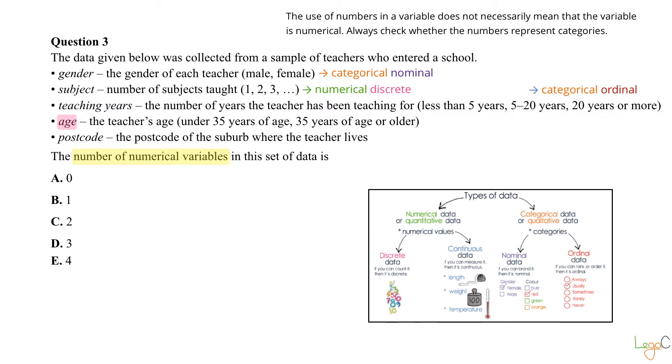Age: the teacher's age, under 35 years of age or 35 years of age or older. Now this is very similar to the variable before, so it's a categorical ordinal variable.